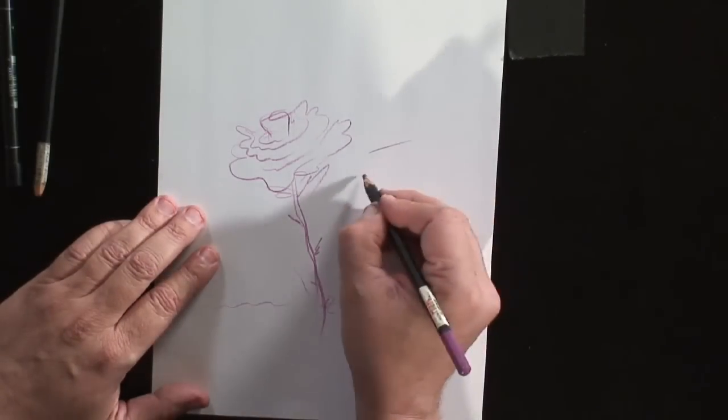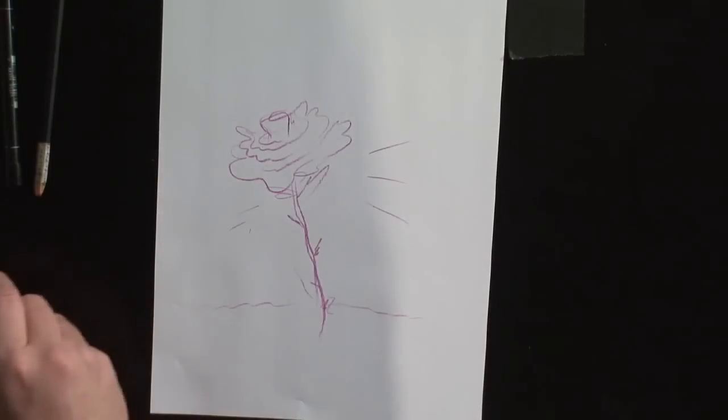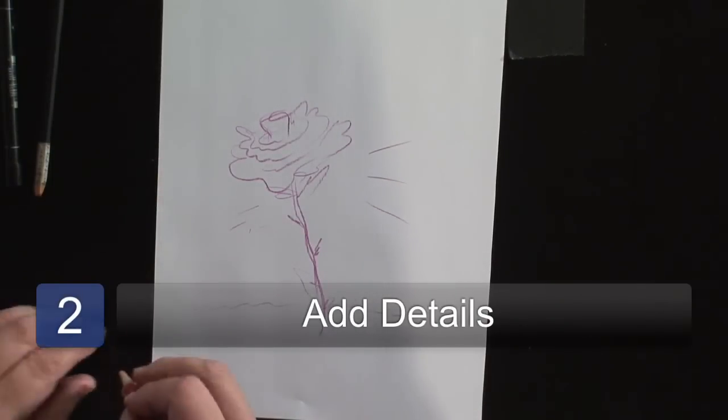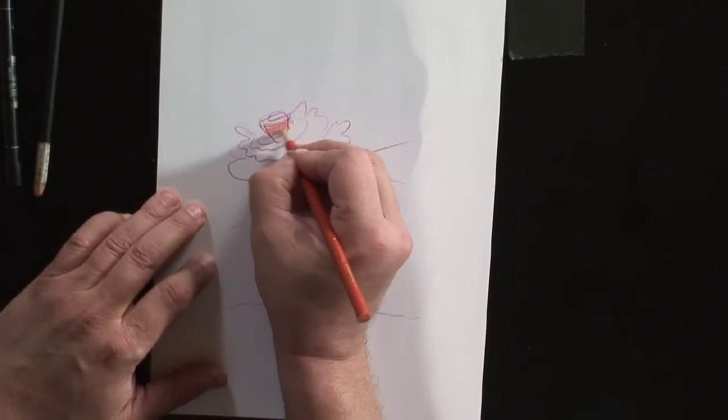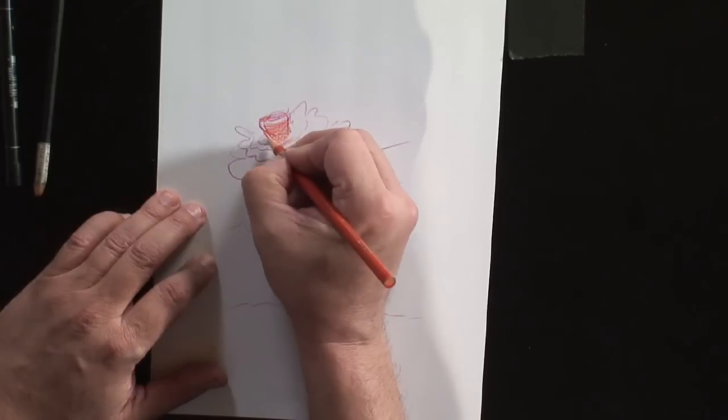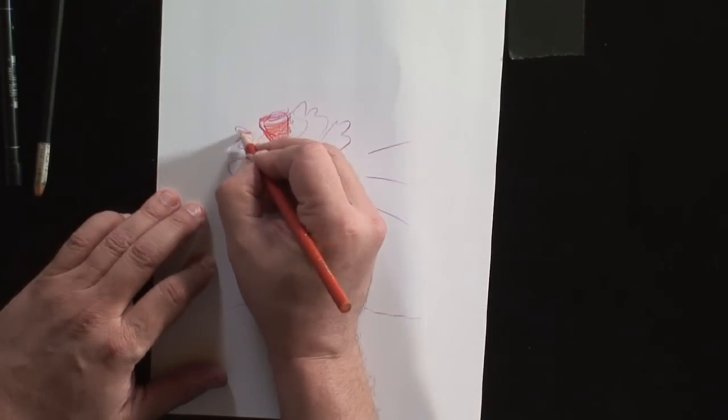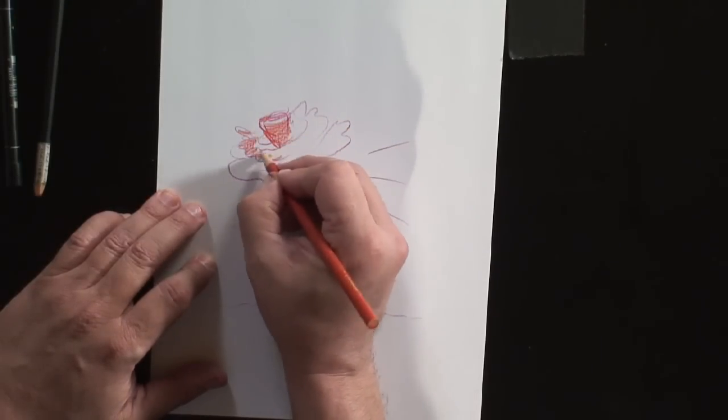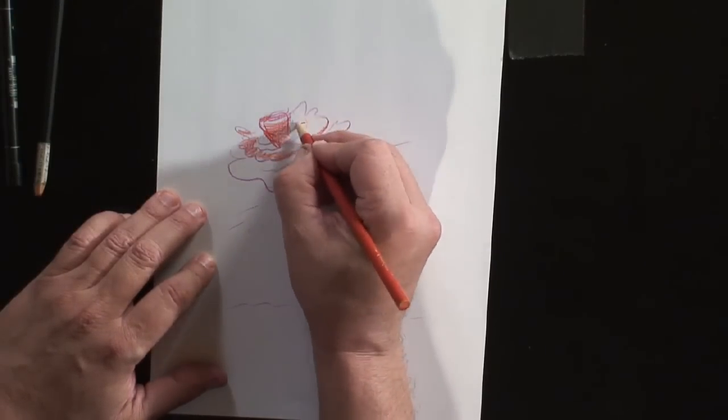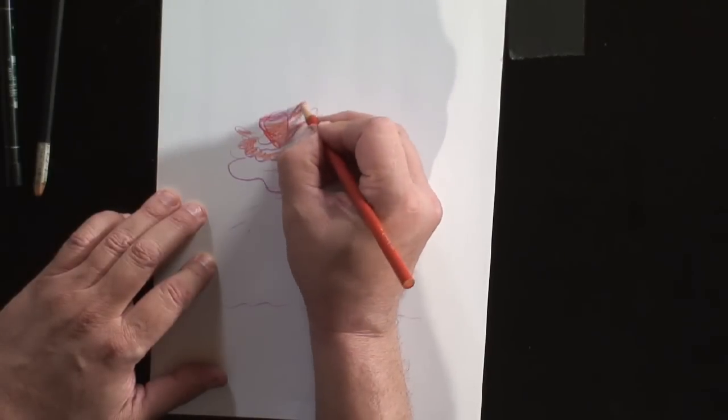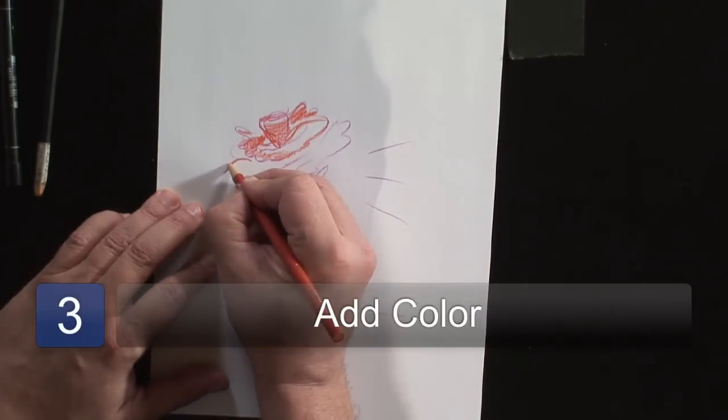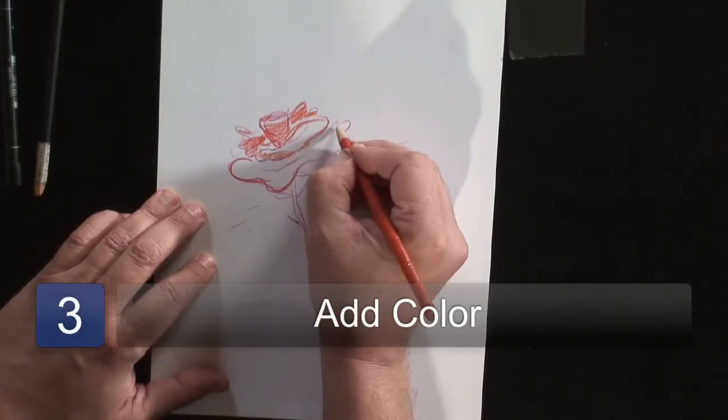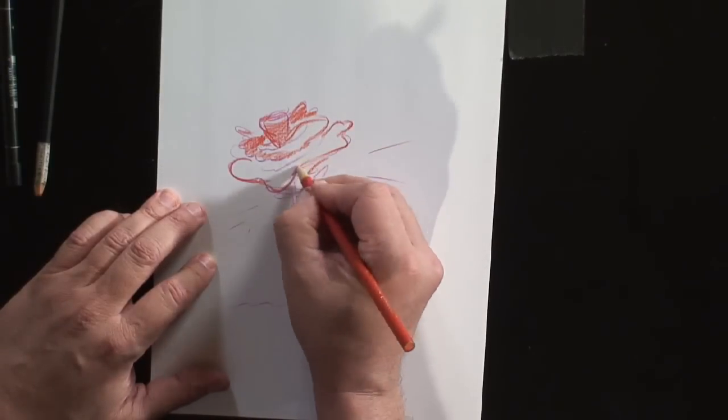There it is out in the yard there. Then you go back in and start to put in some of the details, like the top there, and various little ruffles and turns and all the nooks and crannies in here. No two roses are the same.